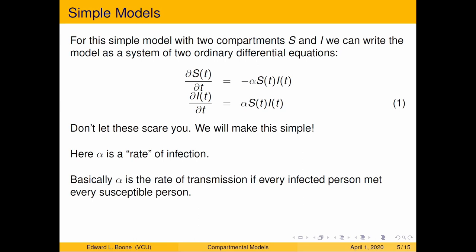For this model with two compartments S and I, we can write this as a system of two ordinary differential equations, that ∂S/∂t is basically this mixing coefficient or rate of infection times how many people are susceptible times how many people are infected. This is a way of modeling the rate of infection. Basically alpha is the rate of transmission if every infected person met every susceptible person.